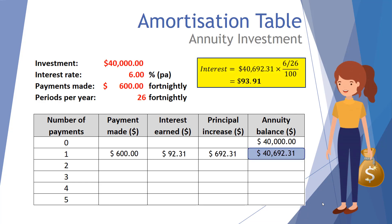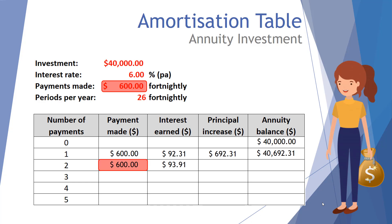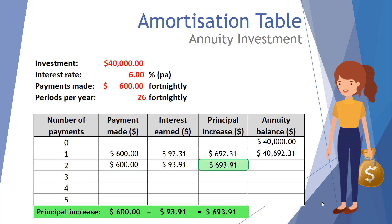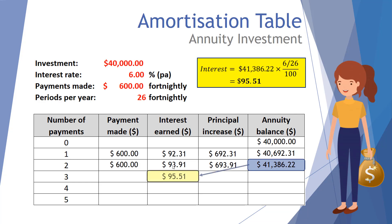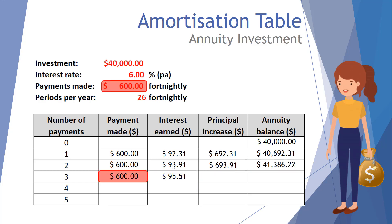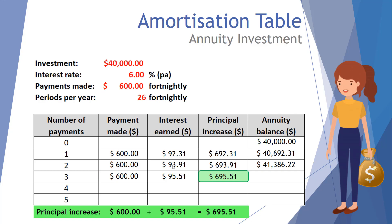We now repeat this four-step process for the remaining payment periods. Taking the balance of $40,692.31, we calculate interest gained, returning $93.91. Our second fortnightly payment of $600 is made, and the principal increases by the sum of $600 and $93.91, giving a principal increase of $693.91. Our annuity balance rises to $41,386.22. Applying interest to that total returns interest of $95.51 for the third payment, and adding a $600 payment gives a principal increase of $695.51.